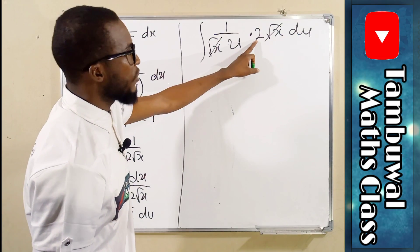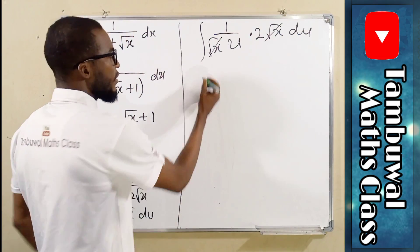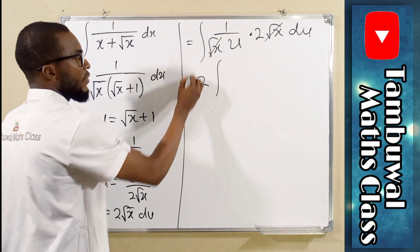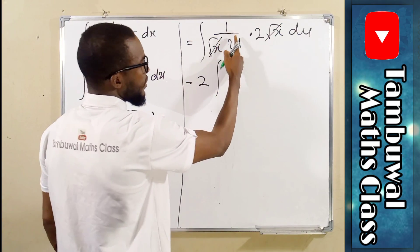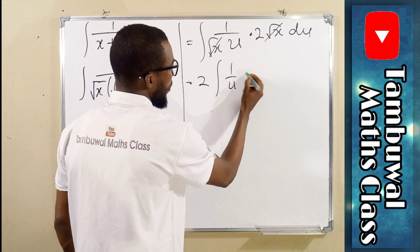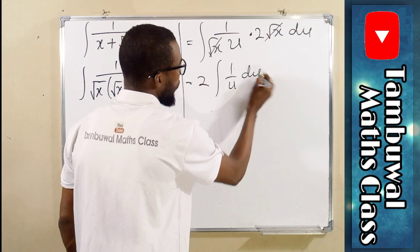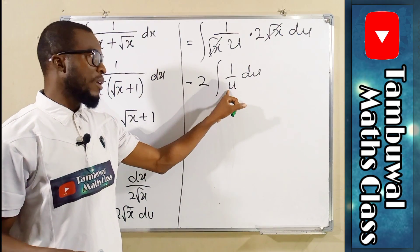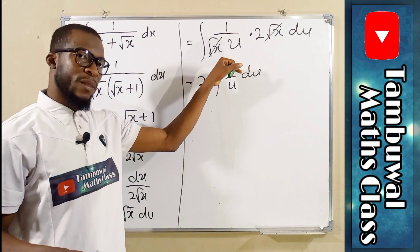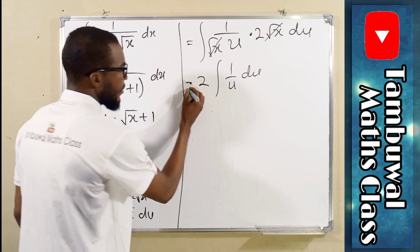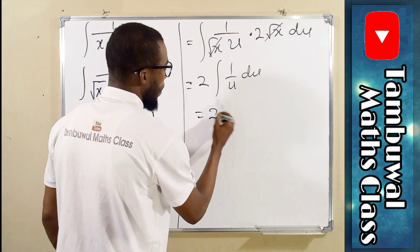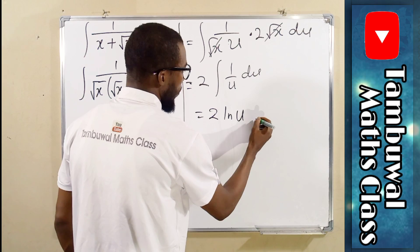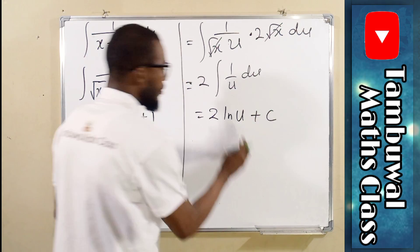We can factor out 2 outside. So we have 2 times the integral of what we have left, which is 1 over u du. And remember, if you integrate this, you are going to obtain the natural log of u. And hence, we have 2 times the natural log of u plus the constant of integration.